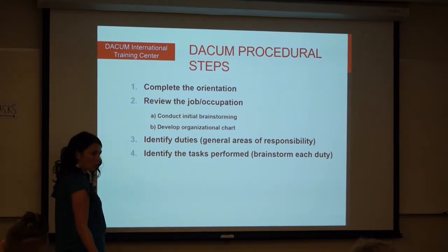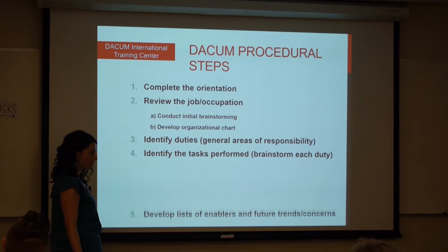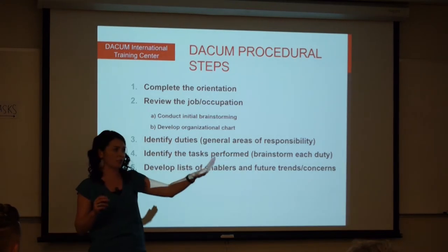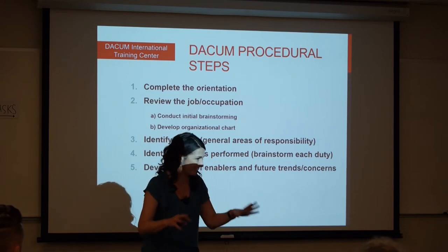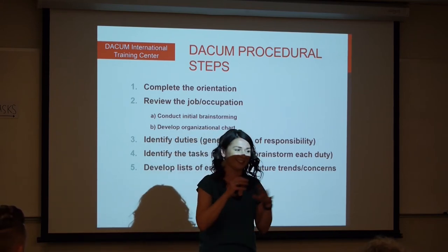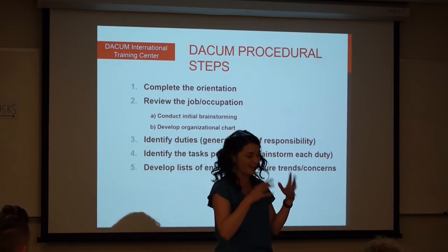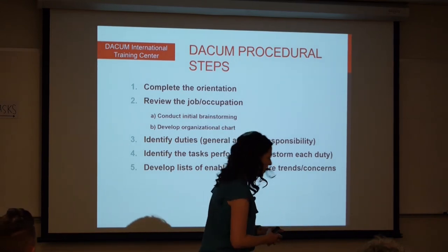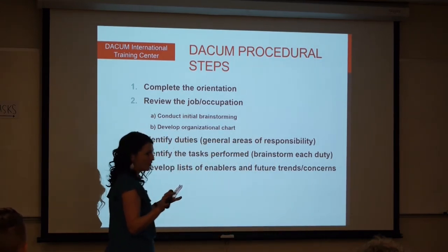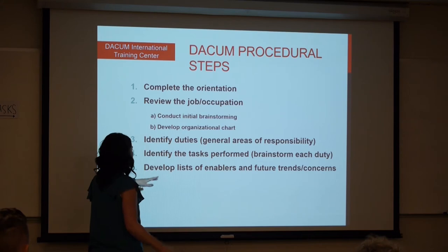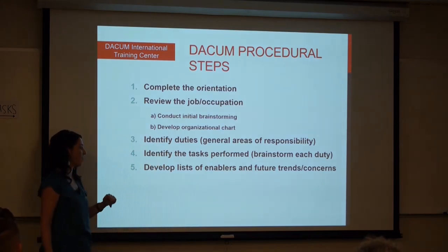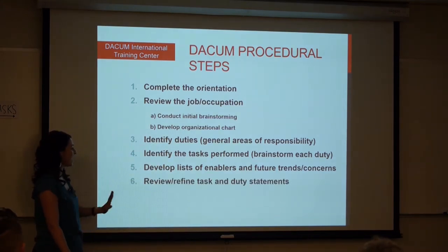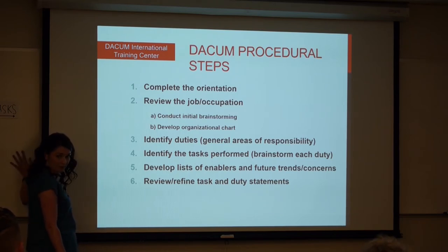Once we get the initial draft of the chart wrapped up, we'll turn our attention over to the list of enablers. And you'll be chomping at the bit by then to lay this stuff out because you'll have talked about knowledge and skills and tasks, knowledge and skills and tools and equipment. And we'll have so many acronyms — it'll be crazy, I'm sure. So we'll grab those enablers, lay them all out on the wall over there. And then once that's done, we'll turn our attention back to the chart and do our final review and refinement.